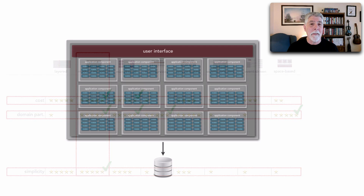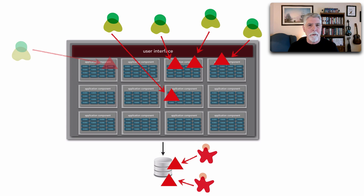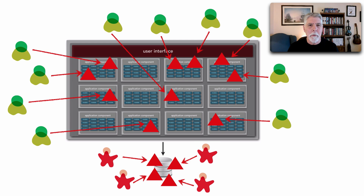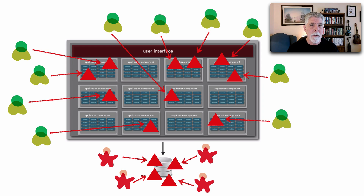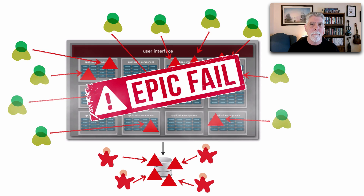So we implement this system in the modular monolith. And what happens? Well, once it's deployed, all the developers are making constant changes to this single deployment unit, as well as the monolithic database — stepping in each other's way, overlaying changes, reducing reliability. And it turns out this system becomes an epic failure.